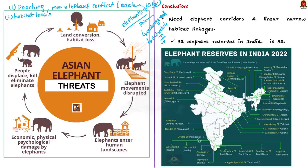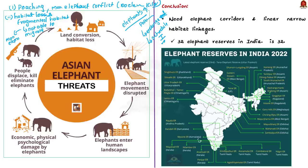Elephants are migratory species that must move from place to place regularly. Since elephant habitats are fragmented and there are no corridors between fragments, elephants cannot move freely and thus move into human habitats, causing conflict. The third threat is change in land use: increasing population leads to conversion of forest land into agricultural fields, reducing elephant habitat and forcing elephants into human territory. These three are the major threats faced by Asian elephants in India.